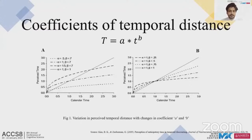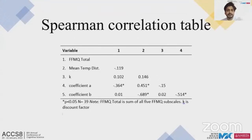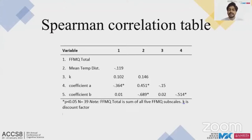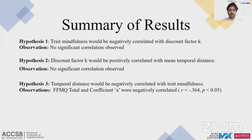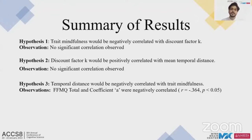Parameters a and b were calculated for each participant. Parameter a can take any positive value while b takes any value between 0 and 1. We found a significant correlation between total FFMQ score and coefficient a, with r = −0.346 and p < 0.05. The correlations between discount factor k and measures of mindfulness or temporal distance were not significant. Thus, of our three hypotheses, only one was supported: a negative correlation between FFMQ score and coefficient a.